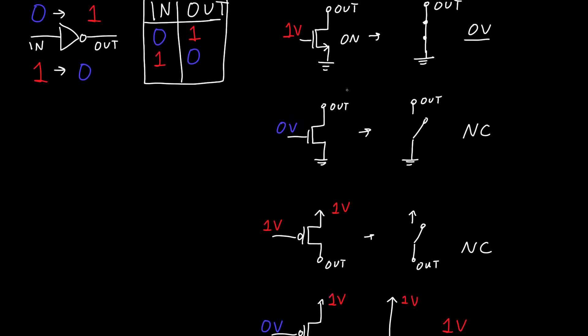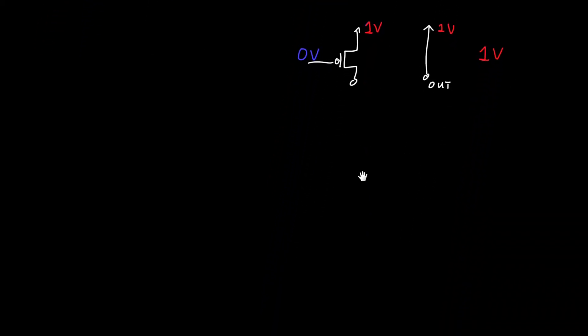And so by combining the NMOS and the PMOS together, we can create our NOT gate. So if we connect them together like this, we have our PMOS up here, our NMOS down here, and I'll draw them with the arrows. This is 1 volt, this is ground or 0 volts, and we connect their inputs together. So this is the input. When our input is 1 volt, the PMOS is going to be off, so it's just going to act like an open circuit.